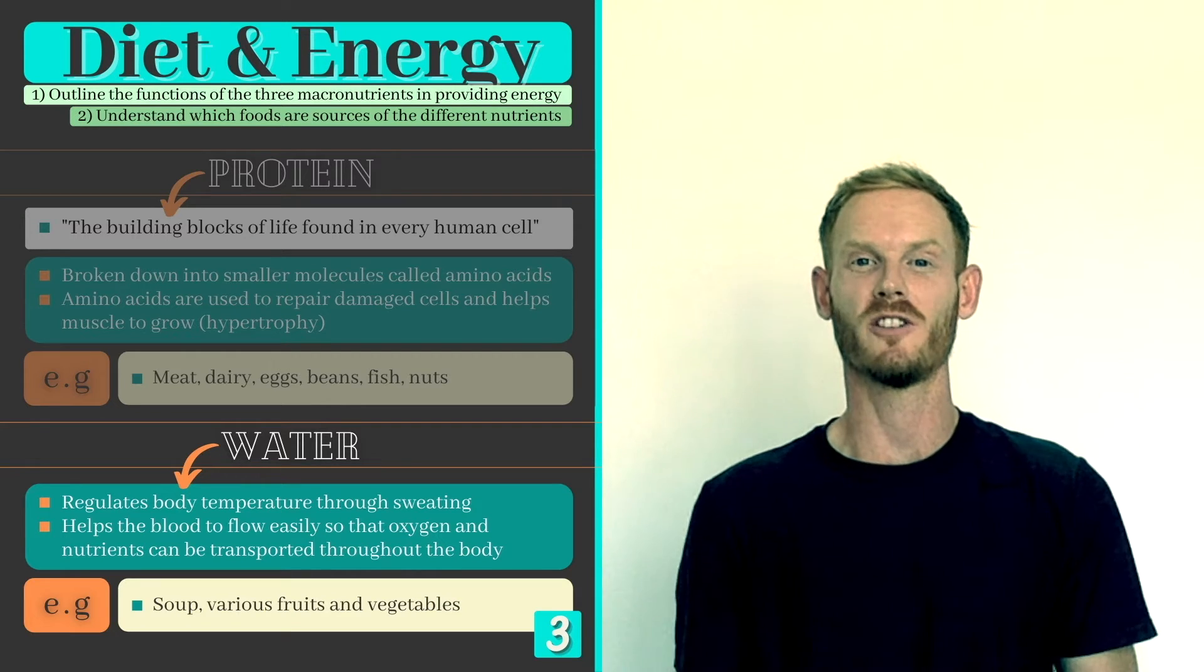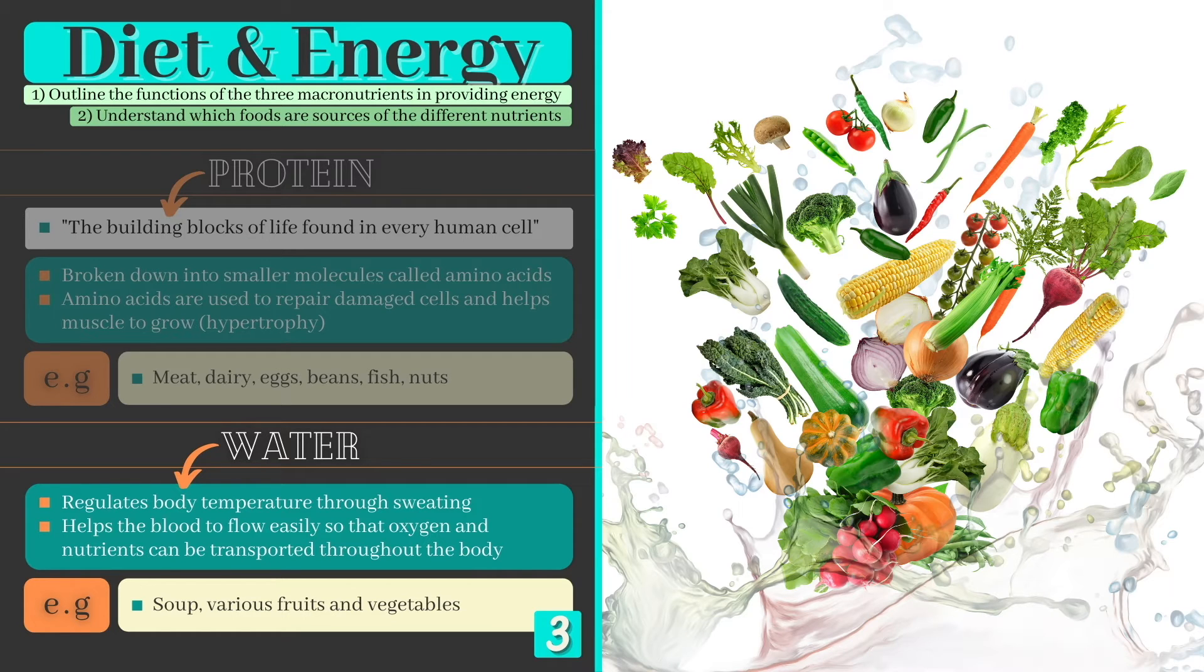Although drinks are the most obvious source of water in our diet, it can also be found in watermelon, soups and various fruits and vegetables.